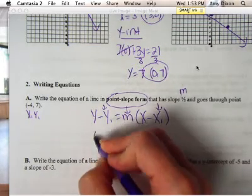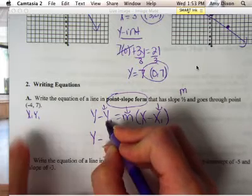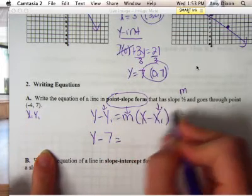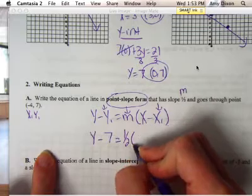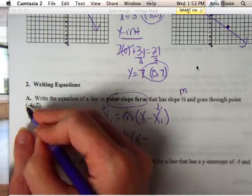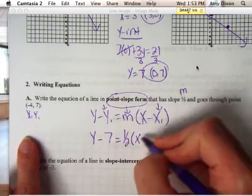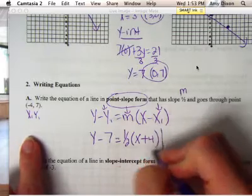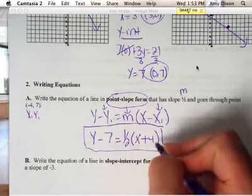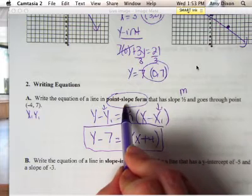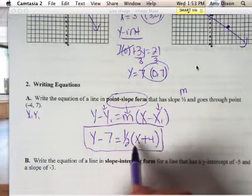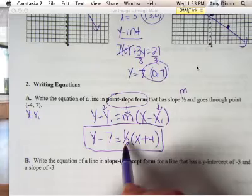So we get y minus our y1 value, which is 7, equals m, which is 1 half, parentheses x minus a negative 4 — which makes it plus 4. This is the equation in point-slope form, and you're done. You don't get rid of the parentheses if it asks you to write it in point-slope form — you leave the parentheses in. That's all you do with this problem.